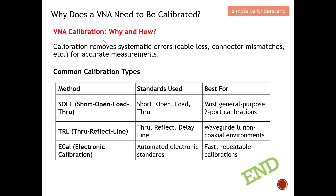The common calibration types include the Short-Open-Load-Through (SOLT) method, which is the most general-purpose two-port calibration. If you are using waveguide or non-coaxial environments, you can consider the True-Reflect-Line (TRL) method. Hopefully in future videos, I will discuss all these calibration types in depth. Nowadays, with smarter equipment, we also have e-calibration (e-cal), where everything is automatic — you don't need to change anything at the end of the cable.